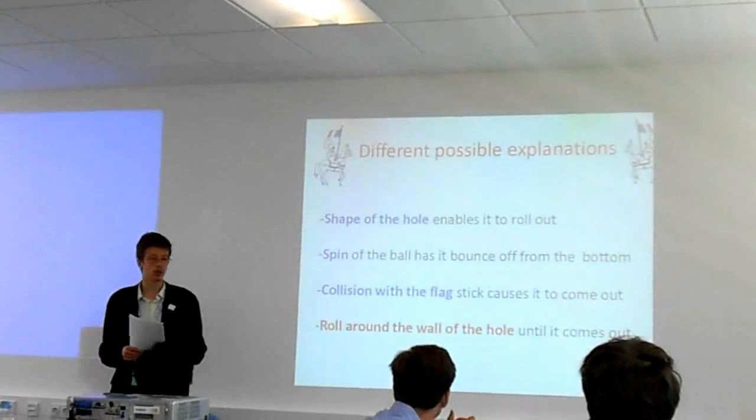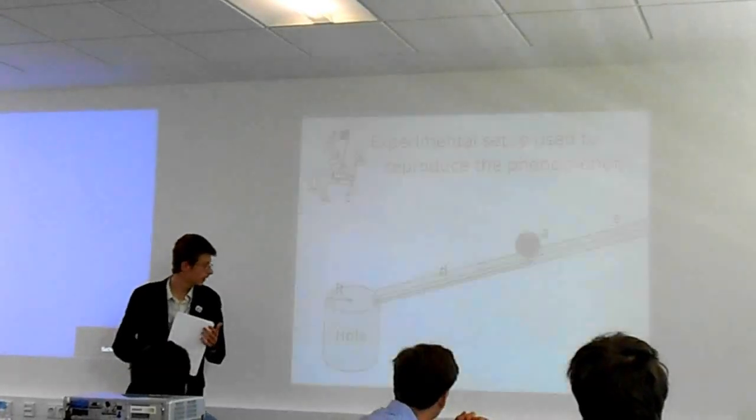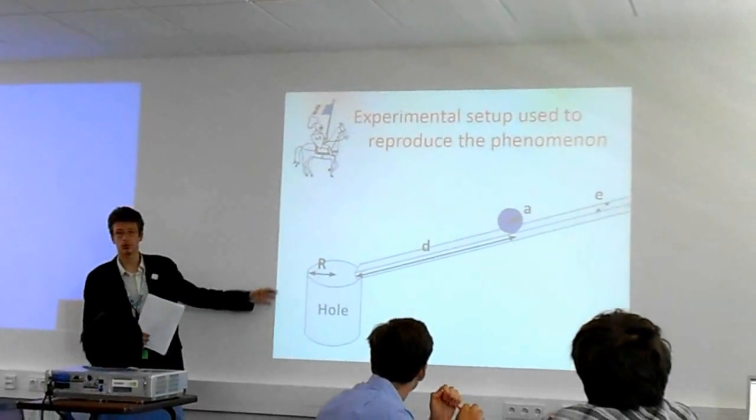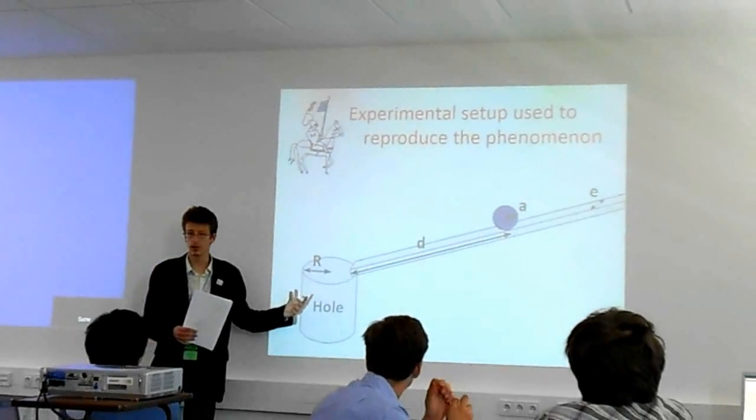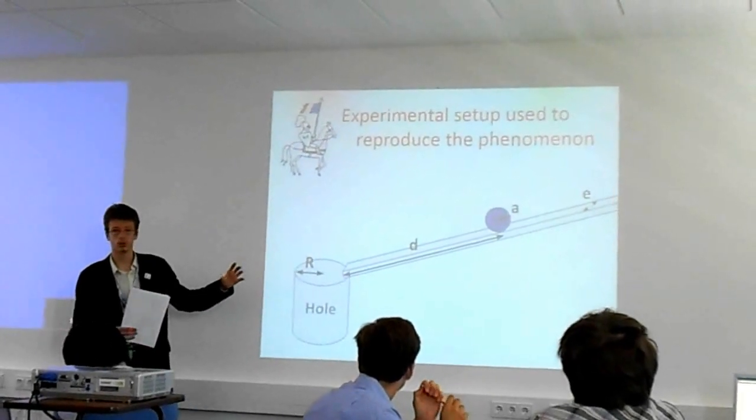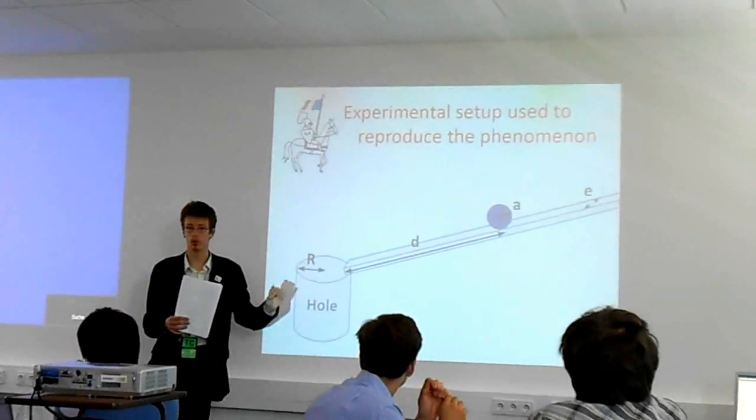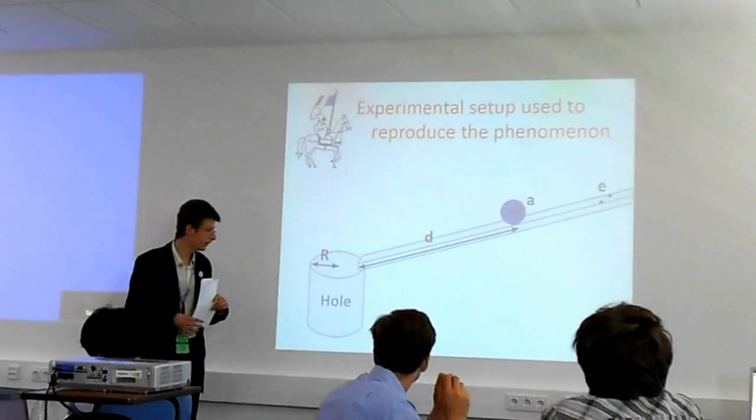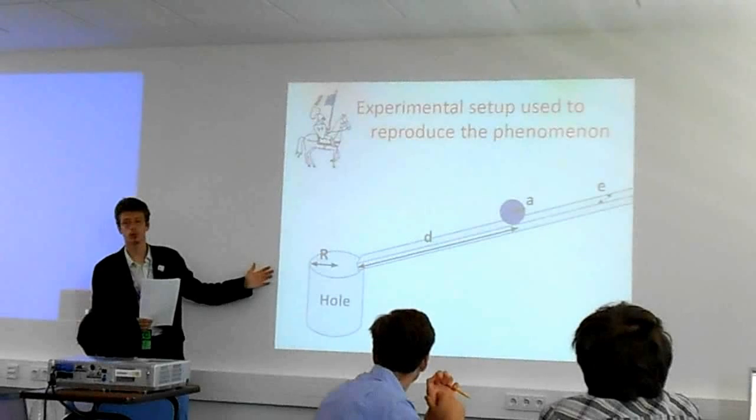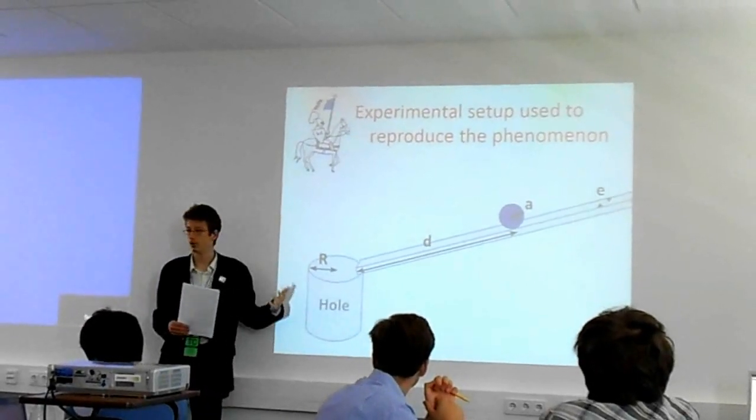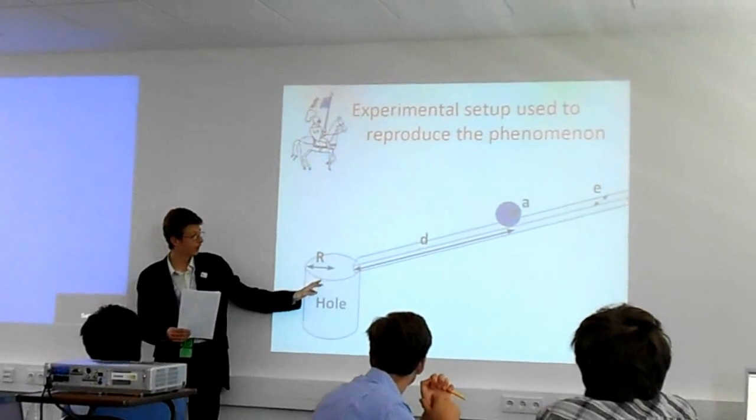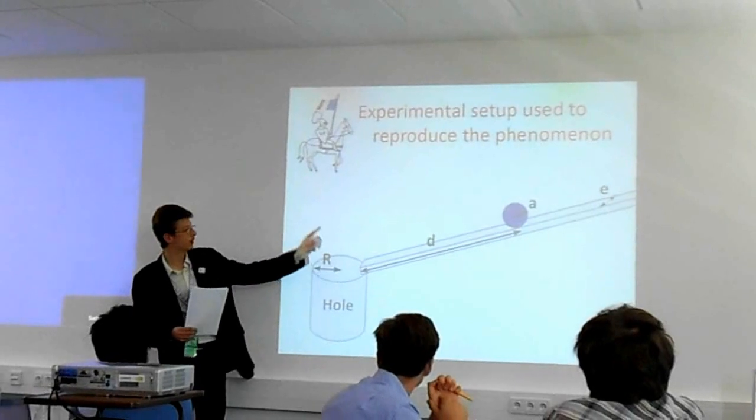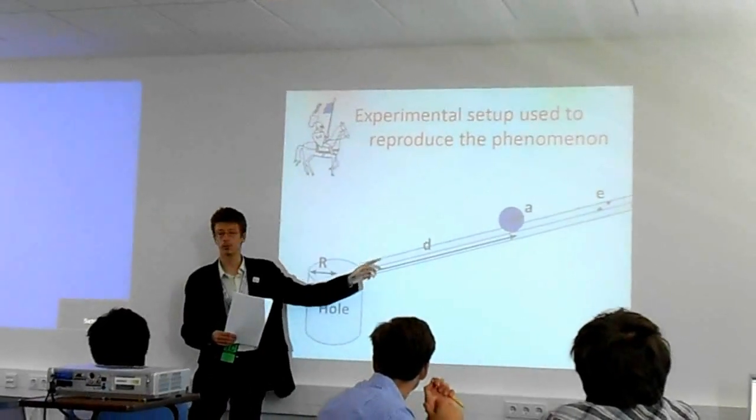We have a model like this with an experimental setup because with a golf ball it's quite hard to observe. We use a hole which is transparent so that we can see what happens inside. Instead of the golf ball, which is quite voluminous, we use a mouse ball because it also has high adherence and it rolls very well. Here are the different parameters which we're going to study: the radius of the hole, the distance the ball rolls on a rail to gain velocity, the radius of the ball A, and the diameter of the rail E.